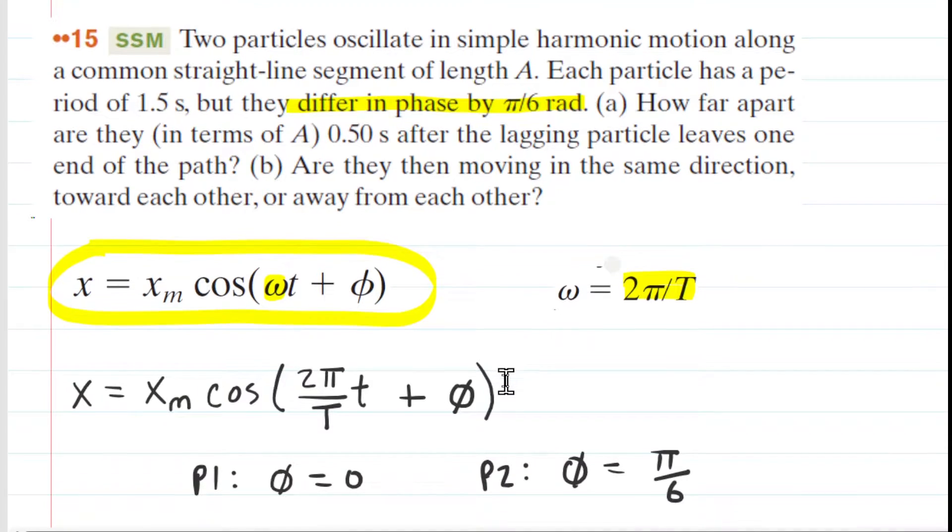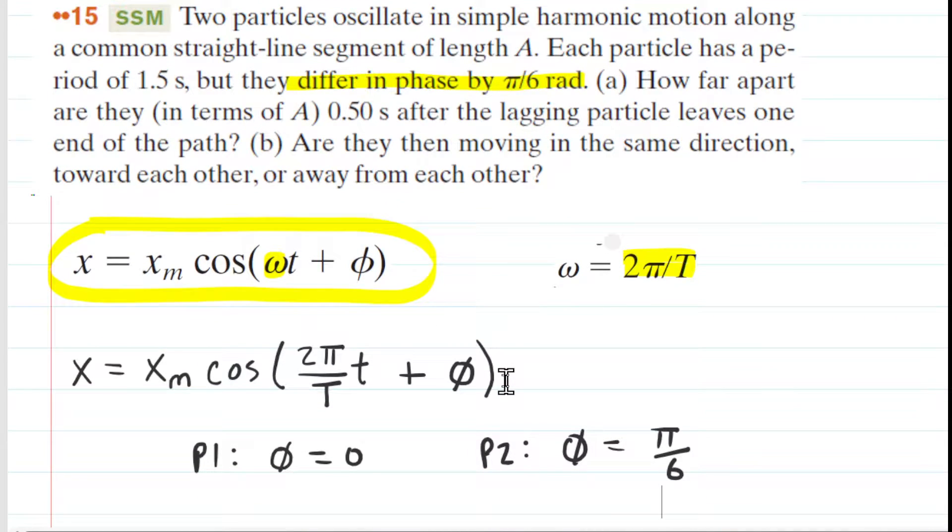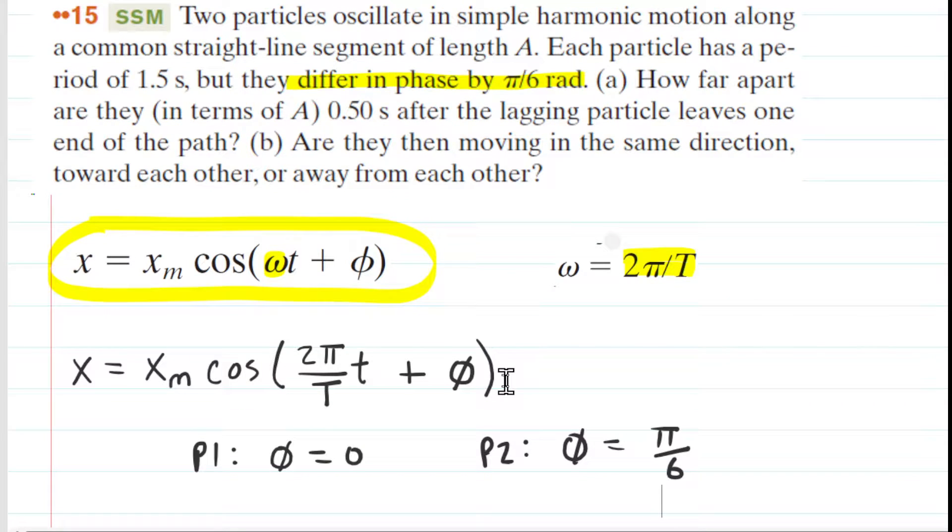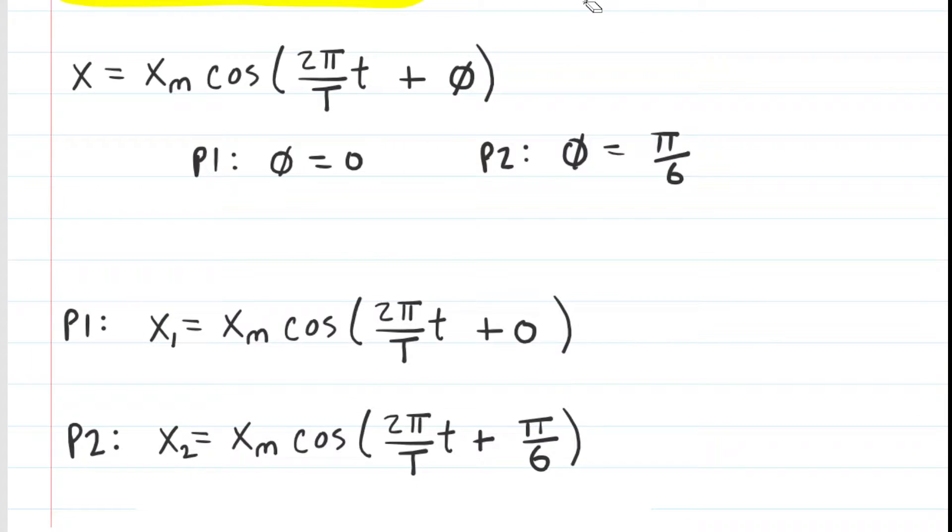So with these ideas in mind, let's set up two equations, one for particle 1 and the other for particle 2. For particle 1, because we have this plus 0 here, we can simplify that and just rewrite the equation as follows. We've also included subscripts of 1 and 2 for the position to denote particles 1 and 2, respectively.